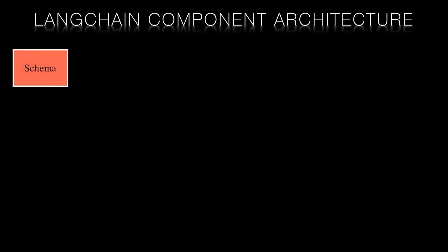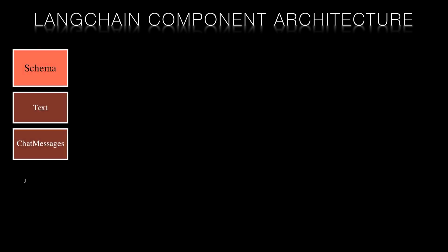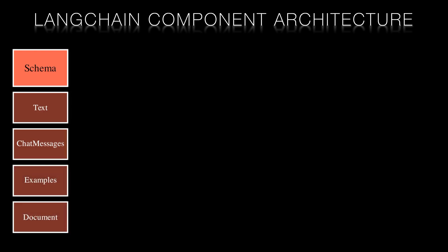Let's take a look at each component in turn. The schema. The schema in Langchain is a formal representation of the data types used in a system. These include text, chat messages, examples, and documents. The schema serves as the bedrock of Langchain, providing structure and standardization and enabling seamless interaction between the different components of the system.